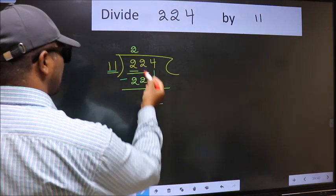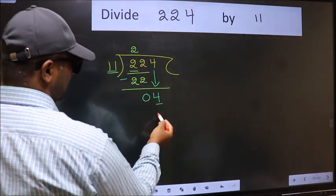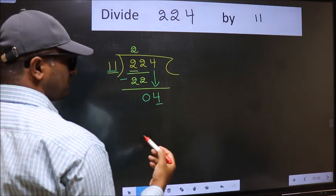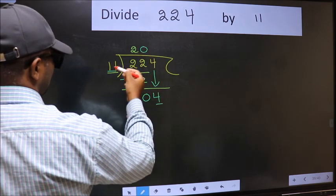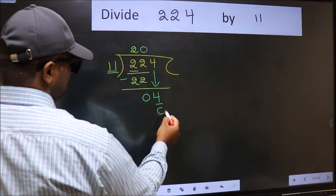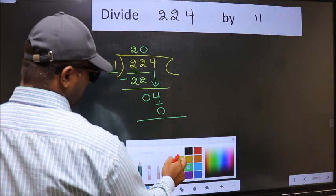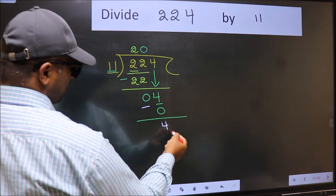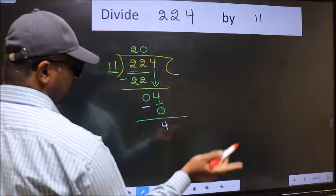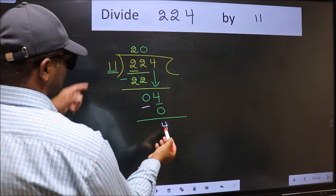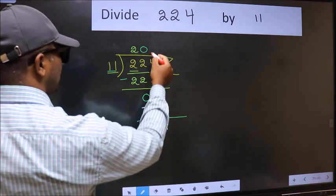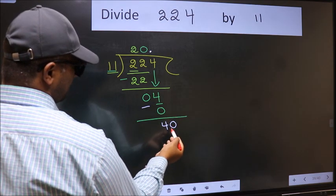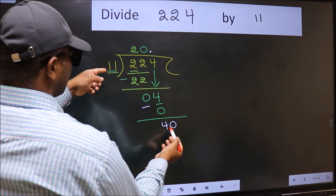Instead, think about which number to take here. If I take 1, we get 11, but 11 is larger than 4. So what we should do is take 0: 11 times 0 equals 0. Subtract: 4 minus 0 equals 4. Over here we did not bring any number down, and 4 is still smaller than 11, so now you can put a dot and take a 0.